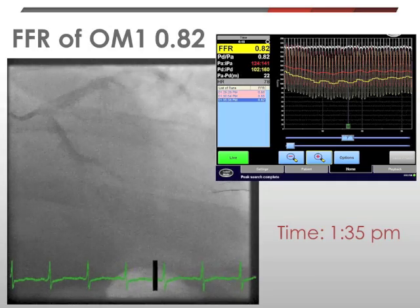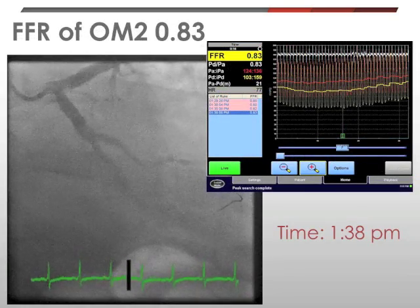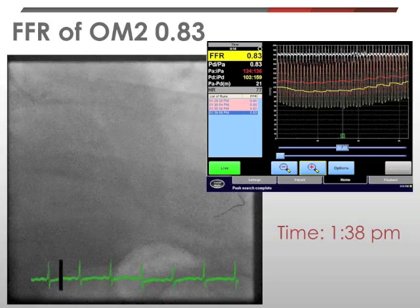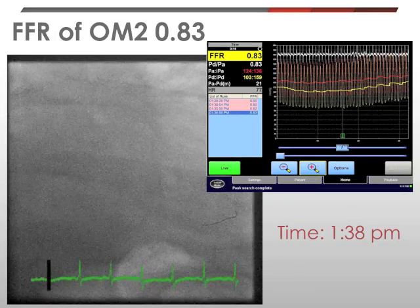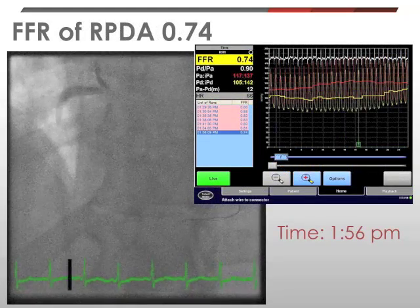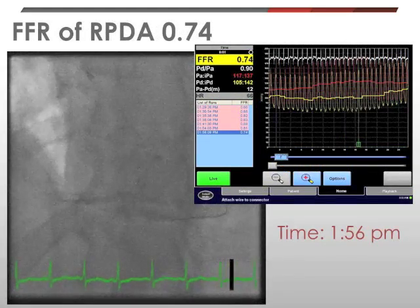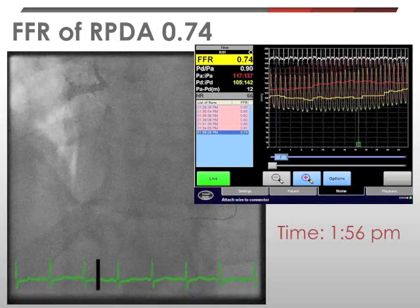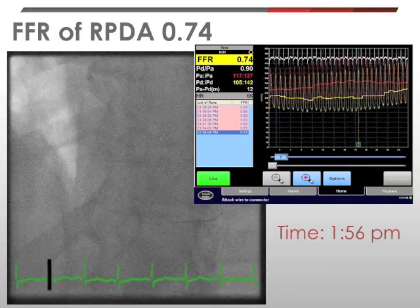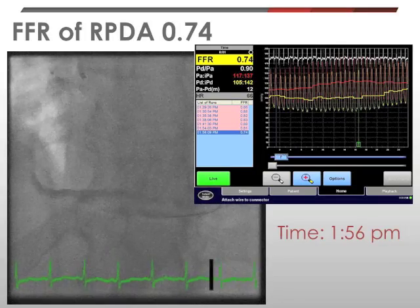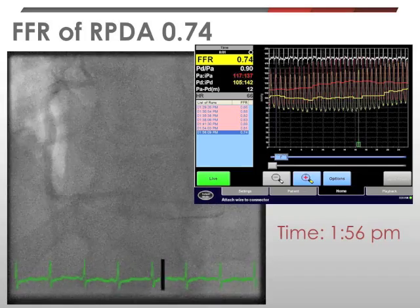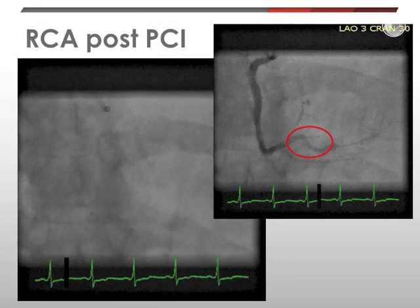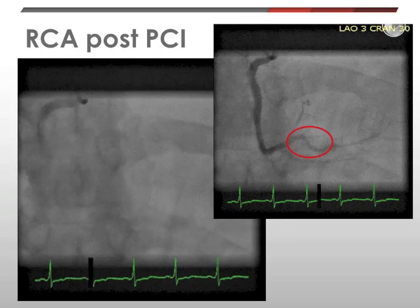We also assessed OM2 by withdrawing the wire, re-equalizing, and then advancing it into OM2. Three minutes later, we have the result: a non-significant stenosis with an FFR of 0.83. We then changed guiding catheters and engaged the RCA with a JR4, advanced the wire into the PDA, and recorded FFR there. That was in fact hemodynamically significant with an FFR of 0.74. Paying attention to the time, it was about 25 minutes total to perform FFR of four different lesions, all with IV adenosine. The decision was then relatively straightforward — we reduced this patient's four-vessel disease to one-vessel disease and proceeded with PCI to the osteo-proximal PDA with a good angiographic result.